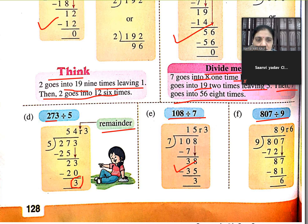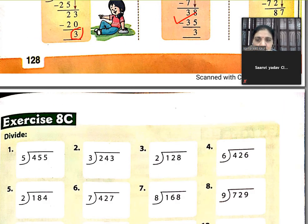Similarly next sum. 9 8s are 72, 8 is left, bring down 7. 9 9s are 81, and 6 is the remainder.